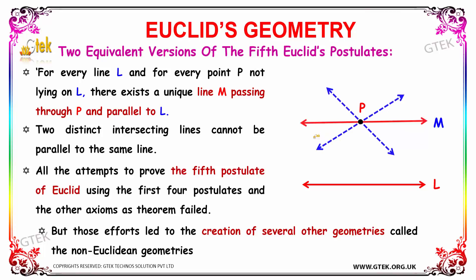The two distinct intersecting lines cannot be parallel to the same line. All the attempts to prove the 5th postulate of Euclid using the first 4 postulates and the other axioms as theorem actually have failed. But those efforts led to the creation of several other geometries called the non-Euclidean geometries.